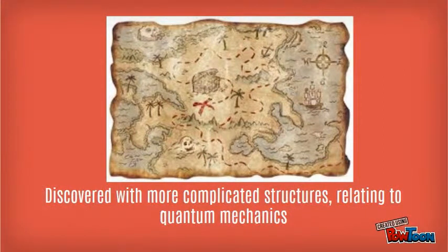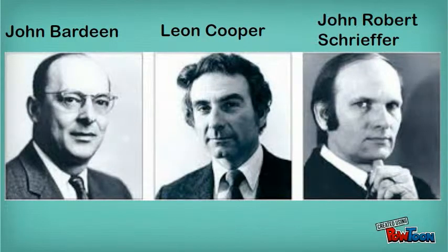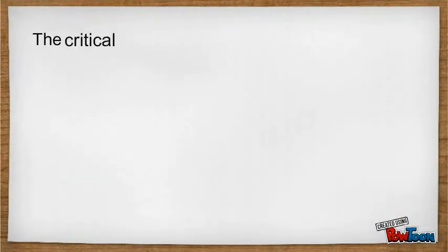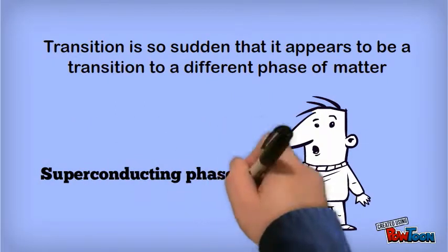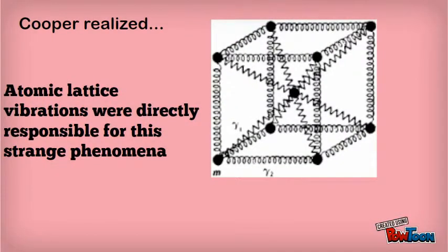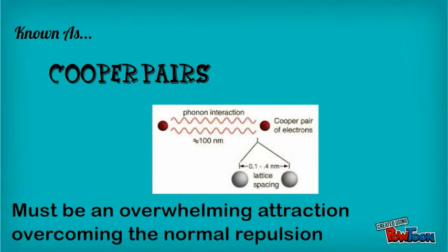The ability of electrons to pass through a superconducting material unobstructed was explained through a structure related to quantum mechanics, which American physicists John Bardeen, Leon Cooper, and John Schrieffer explored in the theory of superconductivity known as the BCS theory. The critical temperature is where electrical resistivity drops to zero — a transition so sudden it appears to be a shift to a different phase of matter. Cooper realized that atomic lattice vibrations were directly responsible, forcing electrons to pair up into teams to pass all obstacles. This condensation of electrons is known as Cooper pairs. For electrons to come together, there must be an overwhelming attraction overcoming their normal repulsion.